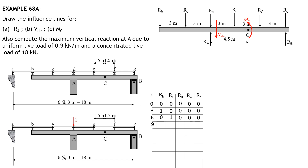When x is 9, the unit load is at D; everything will be zero except RD is 1. So RB is 0, RC is 0, RD is 1, RE is 0, RF is 0. When x is 12, the unit load is at E; everything is zero except RE is 1. So RB is 0, RC is 0, RD is 0, RE is 1, RF is 0.